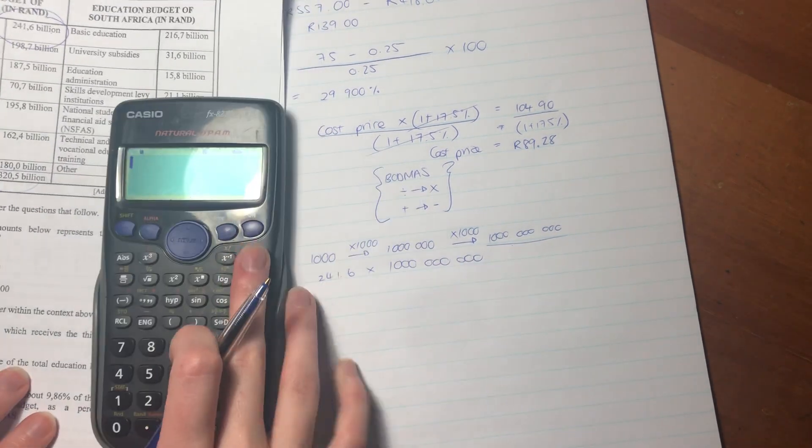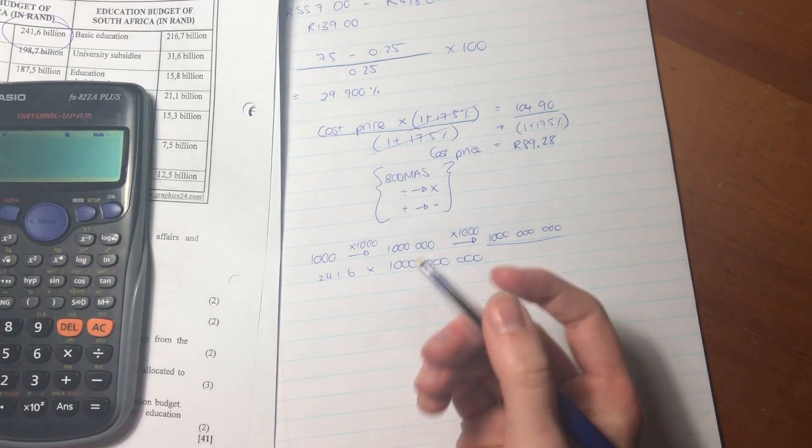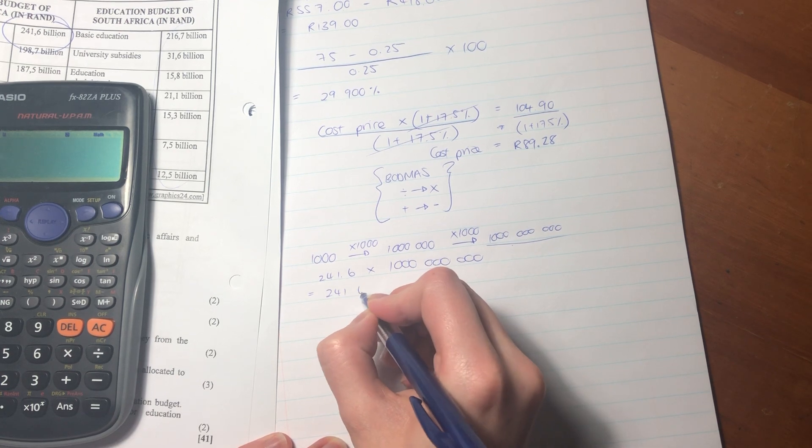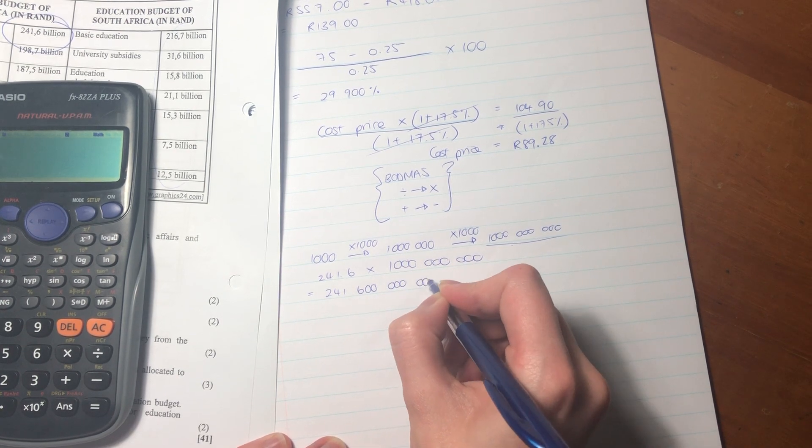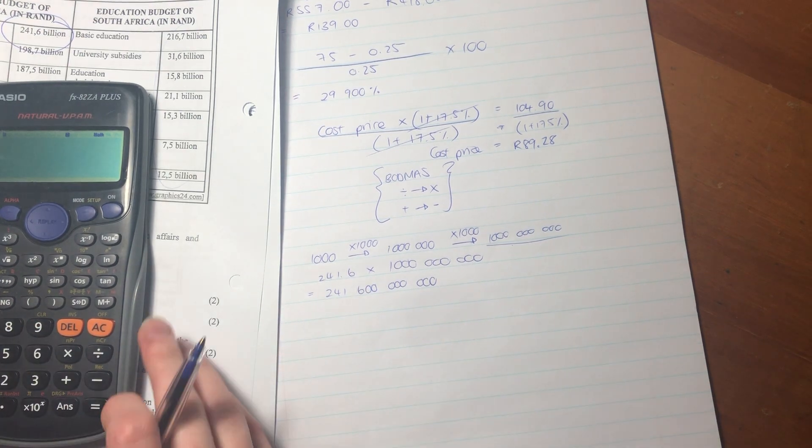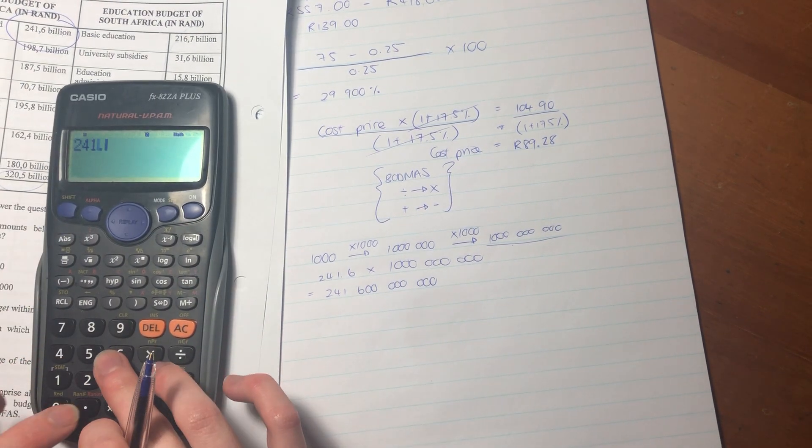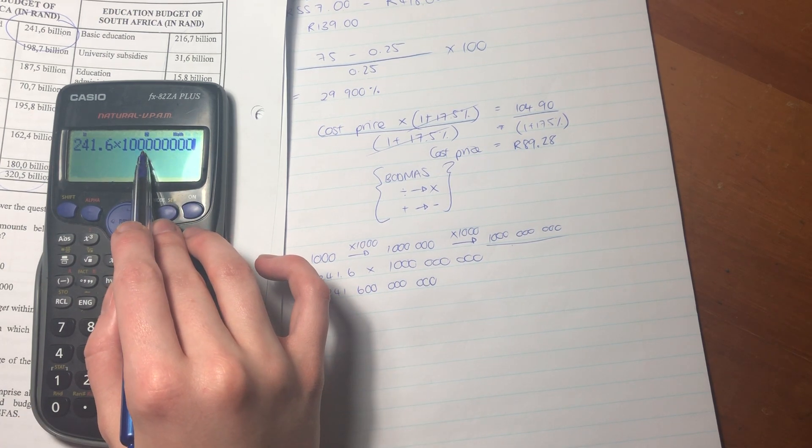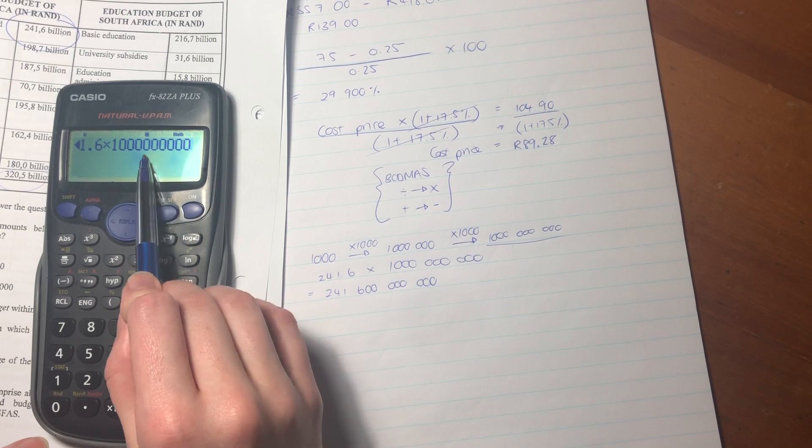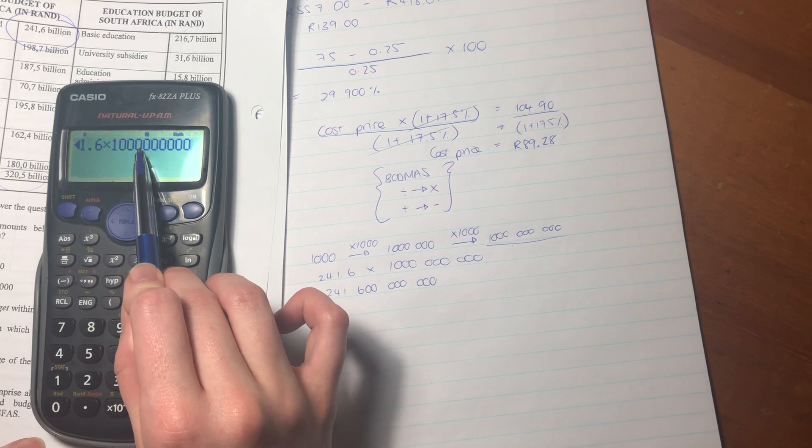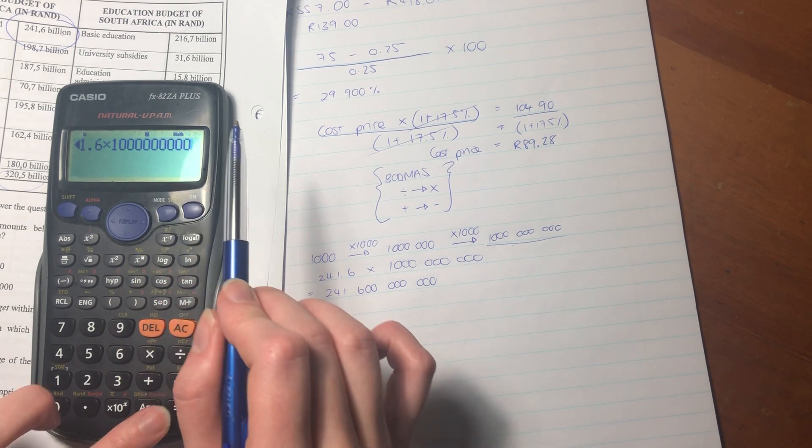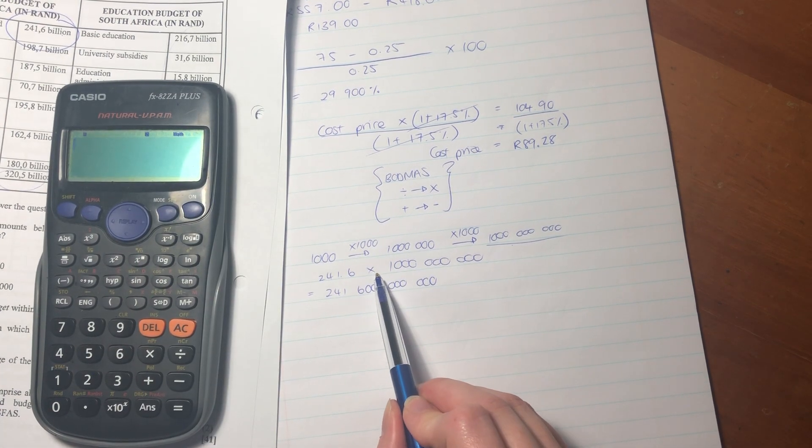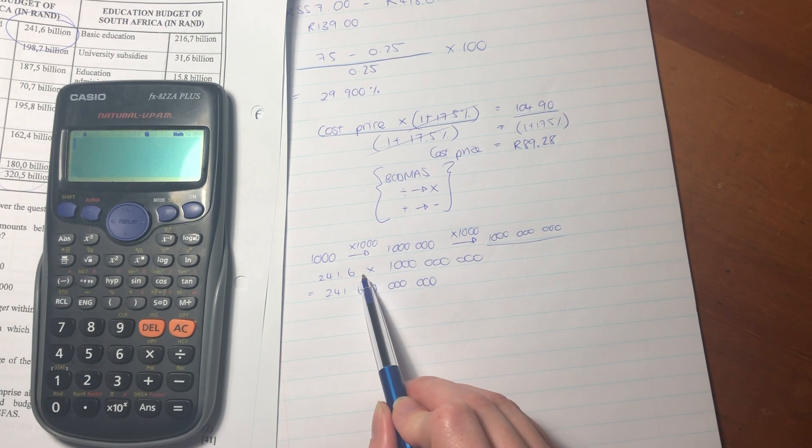It's not really going to help us, I don't think, because it's going to give us like a scientific notation. So 241.6... Let me see if I put it into my calculator with any help. I have a feeling it will not be. Yeah, you see, it's not too helpful.